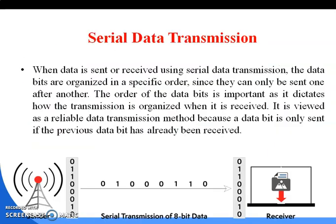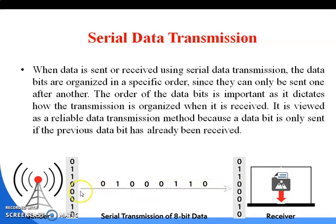Next is serial data transmission. In serial data transmission, data bits are organized in a specific order and can only be sent one after another. The order of the data bits is important as it determines how the transmission is organized when received. In serial transmission, there is only a single line, and all bits are transferred one after another. The process is a little slower, but data is transmitted in a safer manner because serial cables such as SATA cables are much thinner than parallel cables, so there is no maintenance problem.